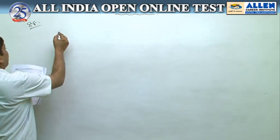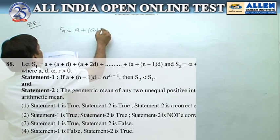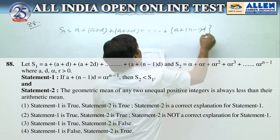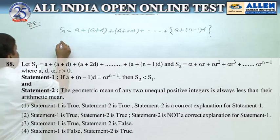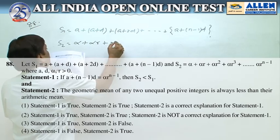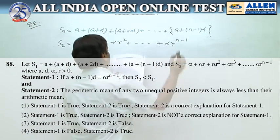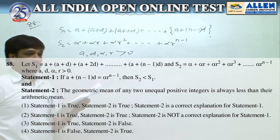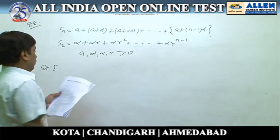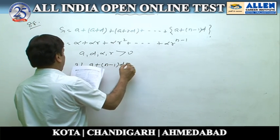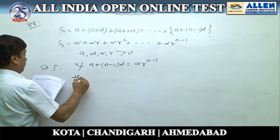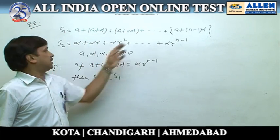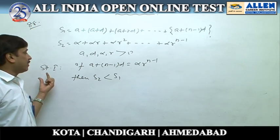In question number 88, S1 is given as: a + (a+d) + (a+2d) + ... + (a + (n−1)d), and S2 is given as: α + αr + αr² + ... + αr^(n−1), where a, d, α, and r are all positive. Statement 1 states: if the nth term of the AP equals the nth term of the GP, i.e., a + (n−1)d = αr^(n−1), then S2 < S1.